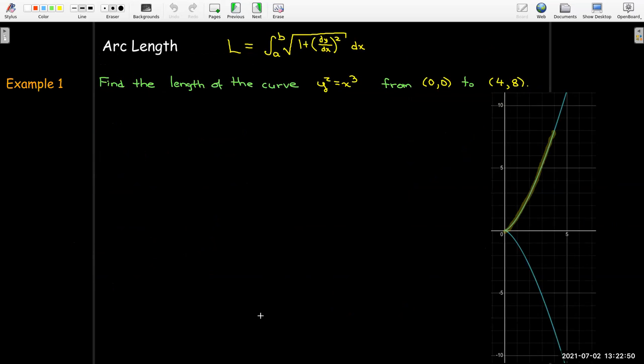So let's go ahead and use this formula to calculate the length of the curve y squared equals x cubed from the point (0,0) to (4,8). So this blue curve is showing us what this particular curve looks like, and the shaded part or the highlighted part is the length that we're trying to calculate.